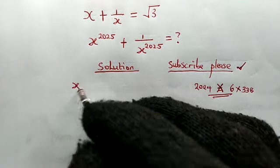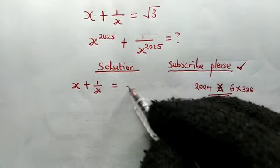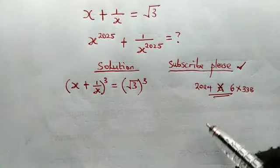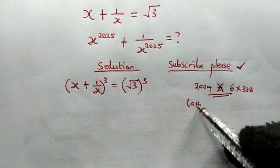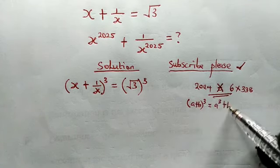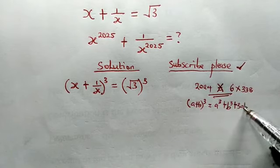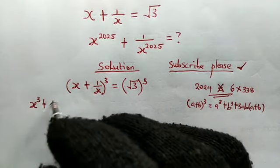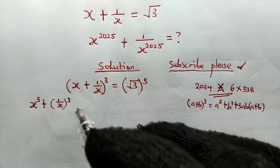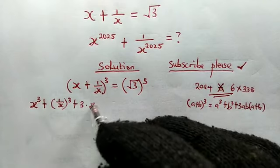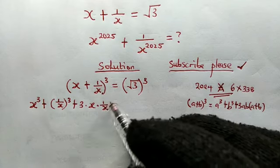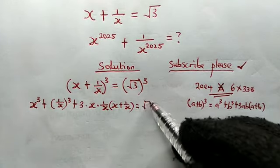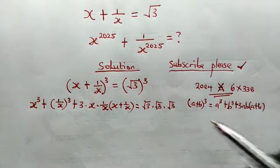We have x plus 1 over x equal to √3. Let's go ahead and cube both sides of this equation. From the left we're going to make use of the property (a + b)³ = a³ + b³ + 3ab(a + b). So from the left we have x³ + 1/x³ + 3 times x times 1/x times (x + 1/x), and this is equal to (√3)³, that is √3 × √3 × √3, which is 3√3.